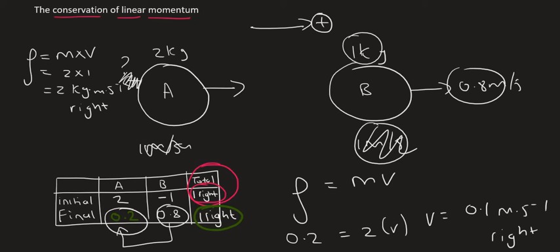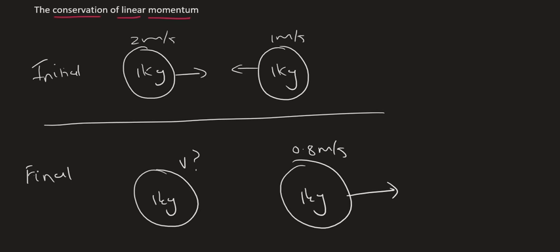So now how are we going to do this in a test environment? Let me show you a better way. Here's a diagram that shows what happened. Initially, we had two objects moving towards each other, and we don't know what the final velocity of the first object is.